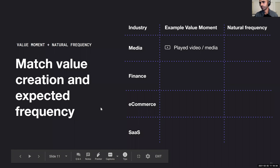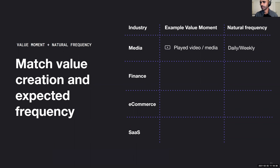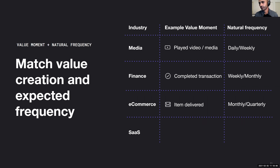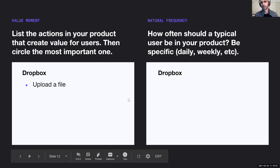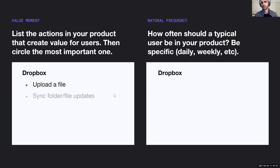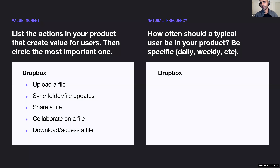Here are examples of different industries and value moments. Media: 'played video' — natural frequency is daily, same as messaging. Finance and e-commerce would probably be monthly, because you go to the app to order an item and the next time might be a week, two, or three weeks later. Here's a Dropbox example — a user could upload a file, sync a folder, share a file, collaborate, or download to access a file. What would be the most important one? Feel free to share in the chat.